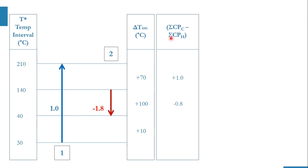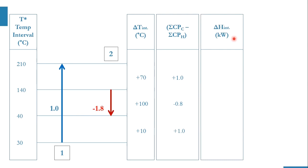Don't be confused by the minus sign. The minus 1.8 was written directly for ease — it doesn't create a double negative. In the third region, only the cold stream (CP = 1) is present. Multiplying these CP differences by their delta T intervals gives delta H values of: plus 70 (first interval), minus 80 (second interval), and plus 10 (third interval).